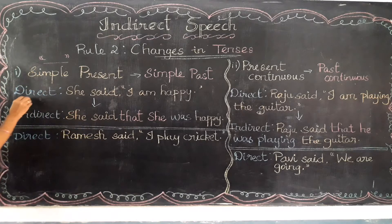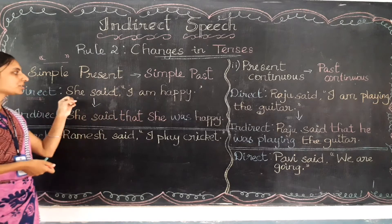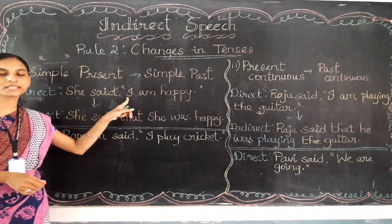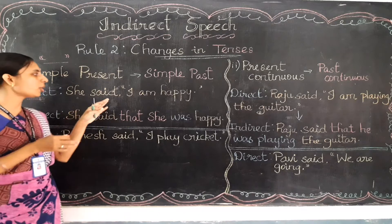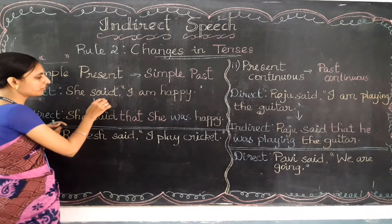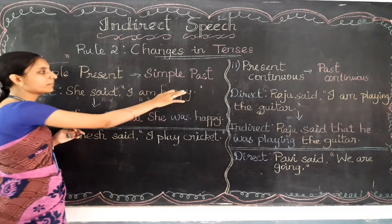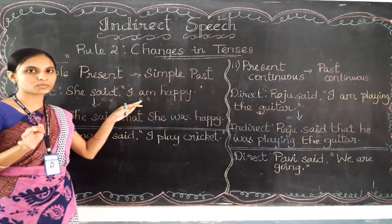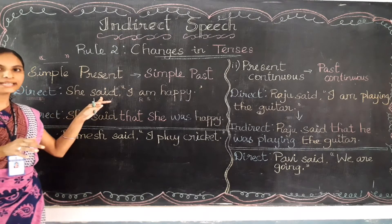Let's learn with an example. Here I have written one example for direct speech: 'She said, I am happy.' The speech inside the inverted commas — 'I am happy' — is the reported speech. The verb given after the speaker's name, that is 'said,' is the reported verb. You need to check which kind of tense is present inside the reported speech.